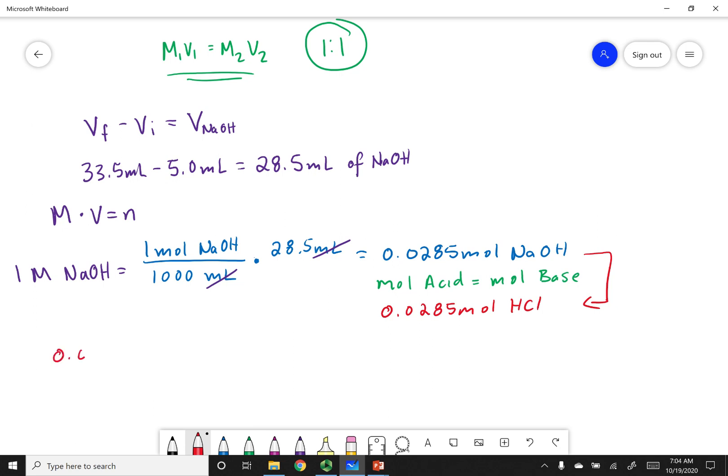So, 0.0285 moles of HCl is going to be divided by the volume. I have 100 mL, or in other words, I have 0.1 liter. So, if I do this out, this is 0.285 molar of HCl.